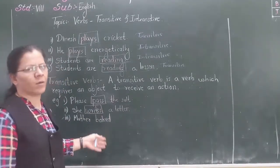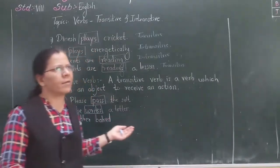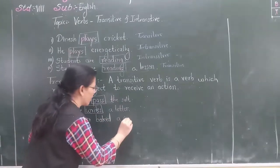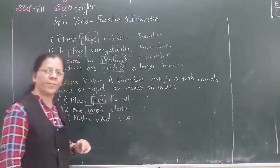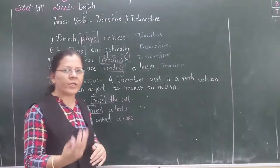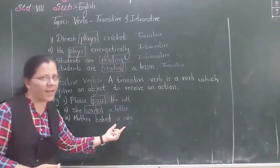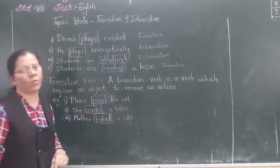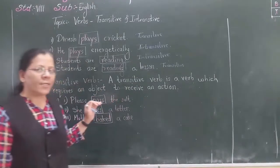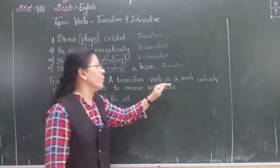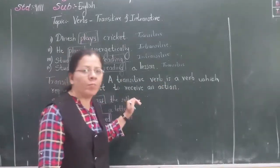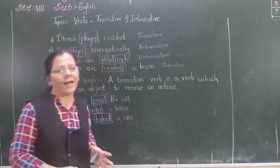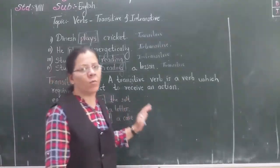Next, 'mother baked.' What? Is there any receiver — is the baking action done on anything here? No. But if I say 'mother baked a cake', the baking action is done on what? Who receives the action of baking? Cake. Hence the verb baked is a transitive verb. So a transitive verb is a verb which requires an object to receive the action.